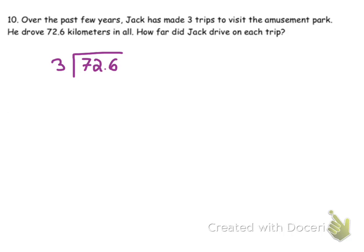3 goes into 7. Oh, let's remember to add our decimal. 3 goes into 7 two times. 2 times 3 is 6. I have one left over, which is less than 3, so we're doing good.